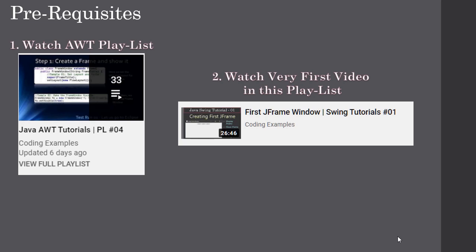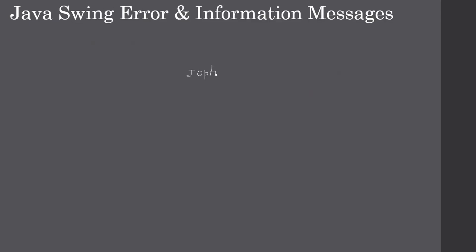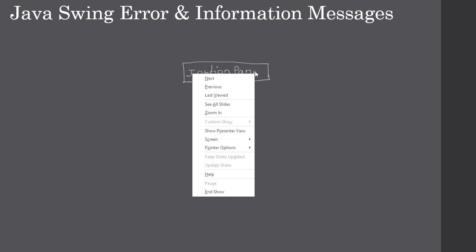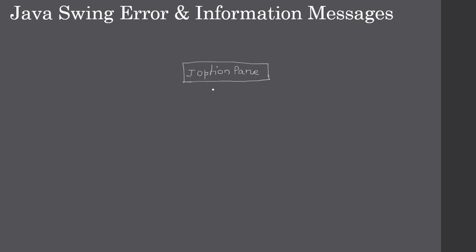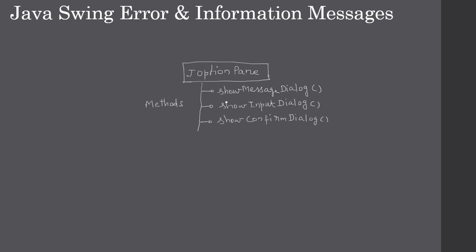The very first video in this Swing series, Swing Tutorial 01, is where we created a JFrame window. On top of this JFrame window we will develop our other components. JOptionPane is the component we use to display message boxes — it provides a lot of methods to display different kinds of dialogues.